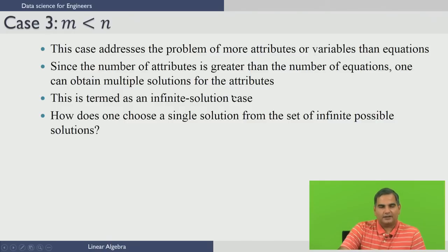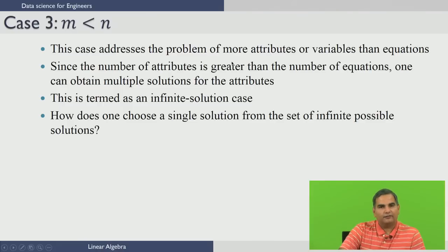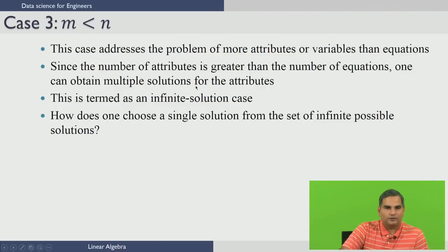Now let us address the last case where the number of equations are less than the number of variables — m less than n. In this case, we address the problem of more attributes or variables than equations. Since we have many more variables than equations, we would have an infinite number of solutions.